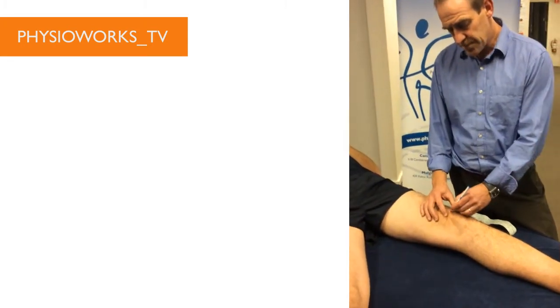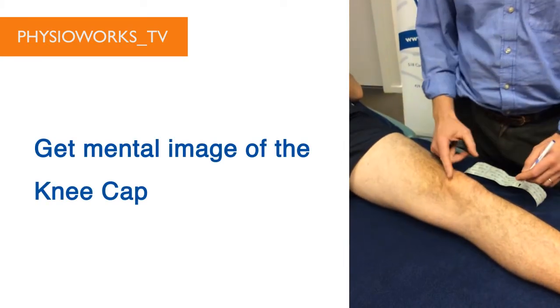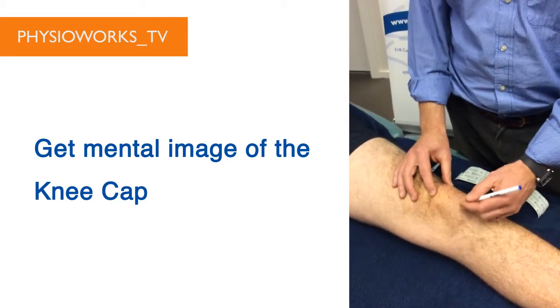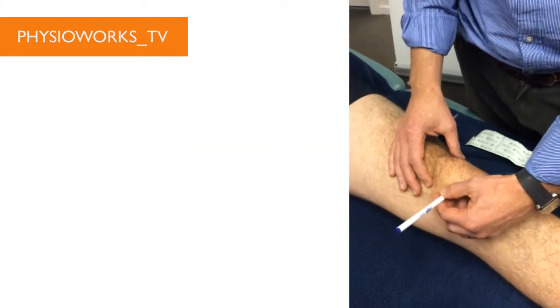Firstly, get a mental image of what the kneecap is. It's quite large and curved at the top but becomes pointy at the bottom. On the inside it's marked and relatively straight, as it is on the outside. So you have the top and bottom and two sides, inside the leg and outside the leg.